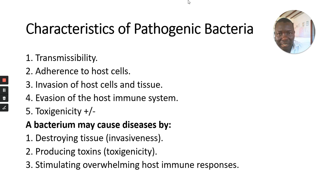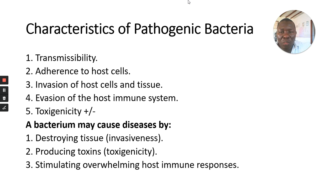Let's look at the characteristics of pathogenic bacteria. One of the characteristics is transmissibility — the ability to be transmitted from one person to another. Does it require a vector or not? Is it transmitted from humans to animals, such as zoonotic infection, or is it transmitted from man to man, through respiratory route to sexual contact?